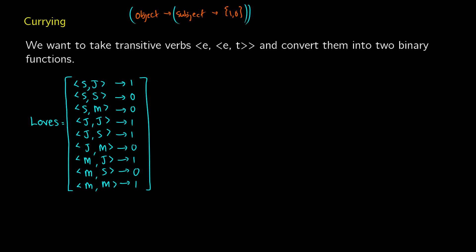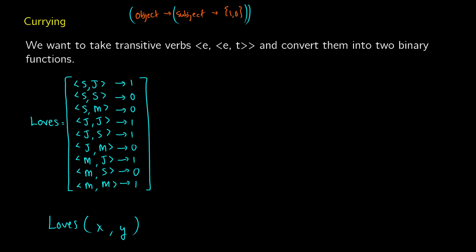Let's say we have a verb like loves — we know how to write loves in predicate logic: loves(x, y). The thing with predicate notation is it doesn't account for the order in which we're acquiring the object and the subject. The other problem is this is a pair of things, and what we really want are two individual elements — something like loves(x)(y), where we can apply two different things to our function. So we go through this thing called currying. What this does is turn a single function that takes pairs into two separate functions that each take an individual element.